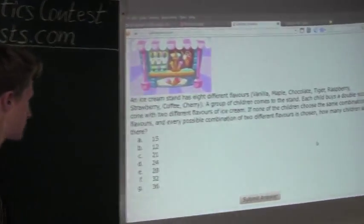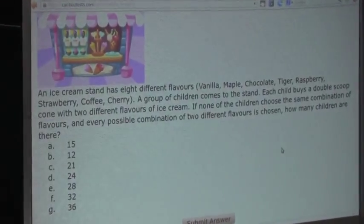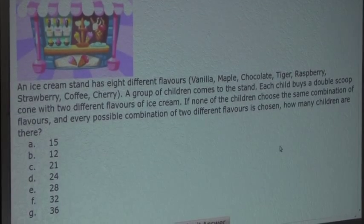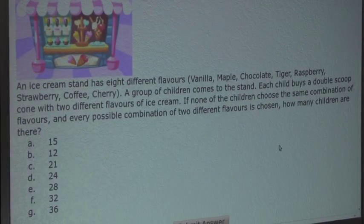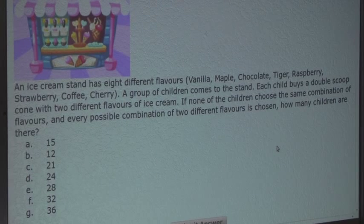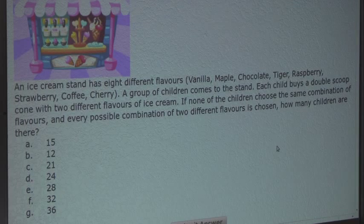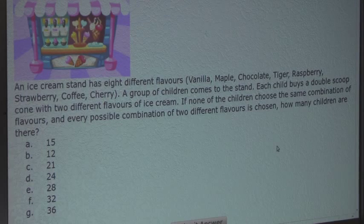Alright, the question is: An ice cream stand has 8 different flavors: vanilla, maple, chocolate, tiger, raspberry, strawberry, coffee, and cherry. A group of children comes to the stand. Each child buys a double scoop cone with two different flavors of ice cream. If none of the children choose the same combination of flavors, and every possible combination of two different flavors is chosen, how many children are there?